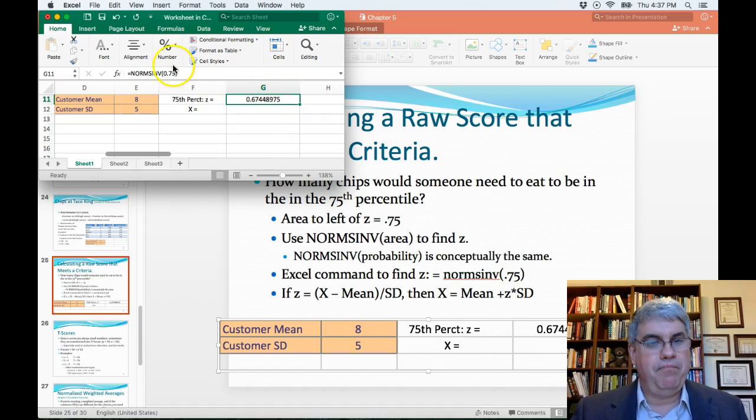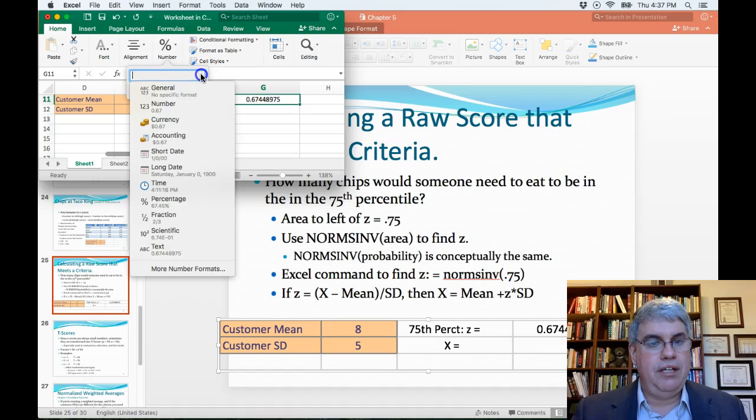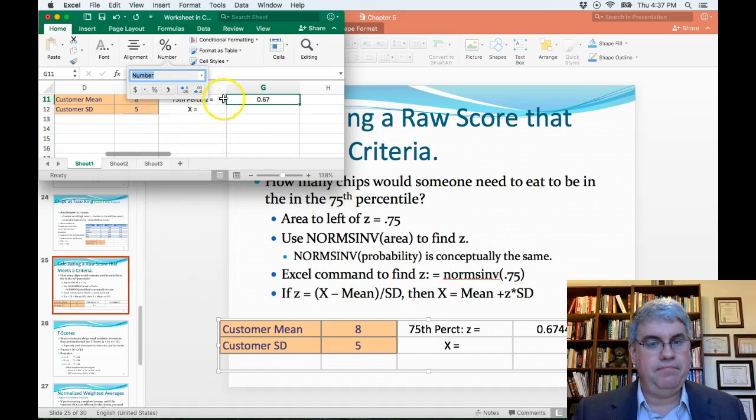So someone that has a z-score of .674—actually, let's change the number formatting of that to something easier to read. So I'm going from home to number, to general to number. So a z-score of .67 corresponds to the 75th percentile.